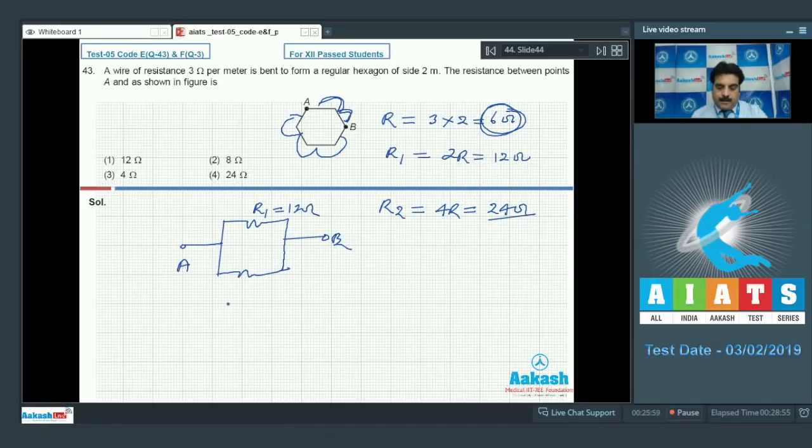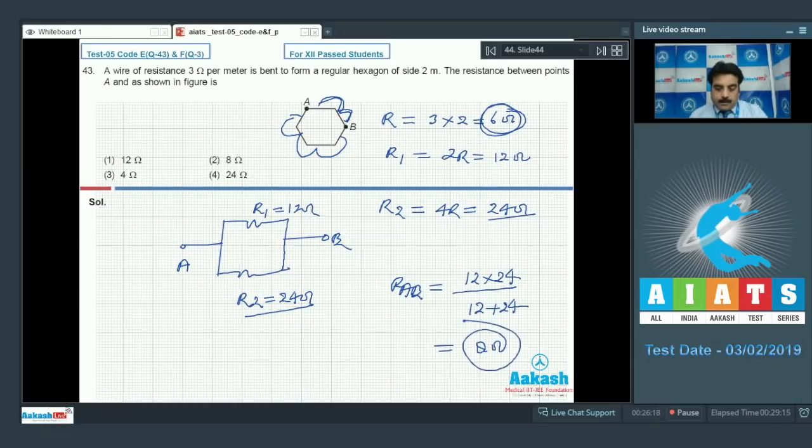between points A and B, and R2 is 24 ohms. The final resistance between AB: they are in parallel, so 12 into 24 divided by 12 plus 24 equals 8 ohms. Option 2 is the right choice.